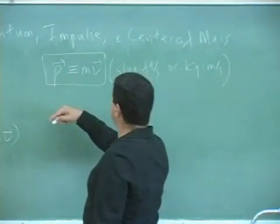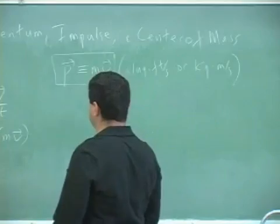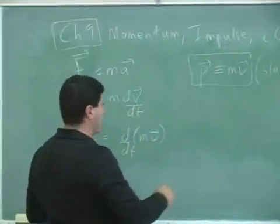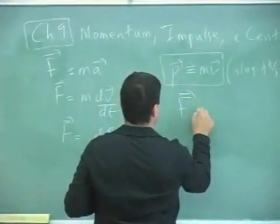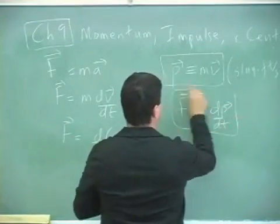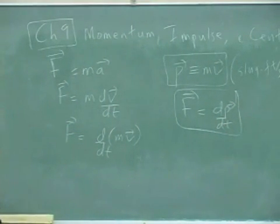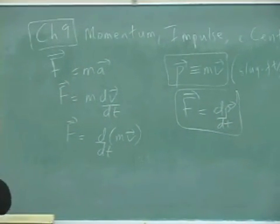So momentum is a vector, just like velocity is a vector, and then mass is a scalar. So now, Newton's law can be expressed as F equals dp/dt, which is actually known as the more general form of Newton's law.